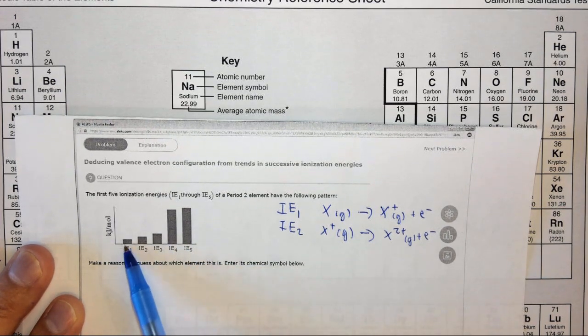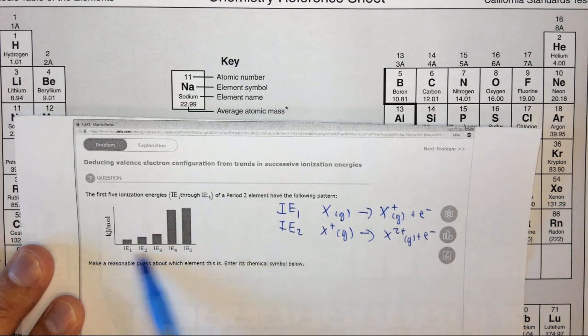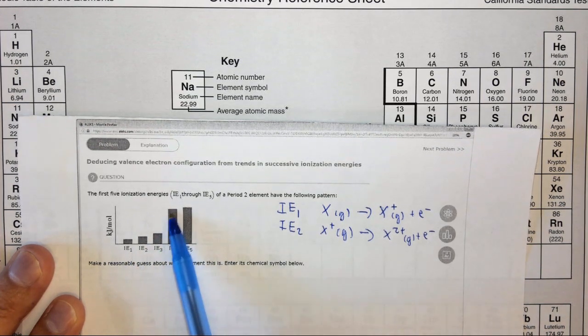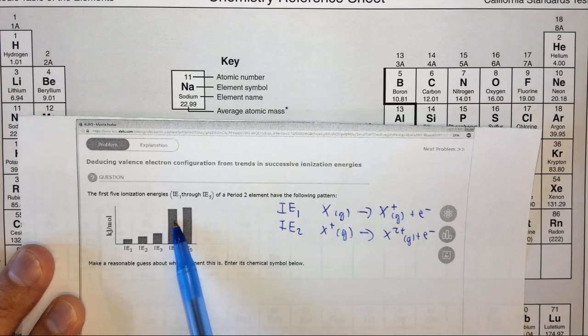This is because electrons one, two, and three are valence electrons, and the fourth one, which takes a whole lot of energy, is a core electron.